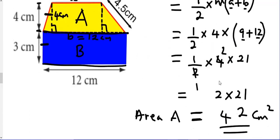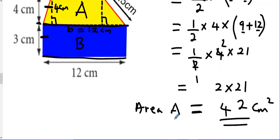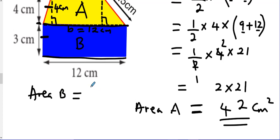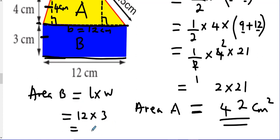Area B is the rectangle — the blue shape. Area B equals length times width. Length is 12, width is 3. So 12 times 3 equals 36 centimeters squared.